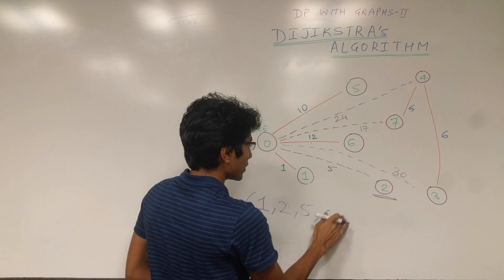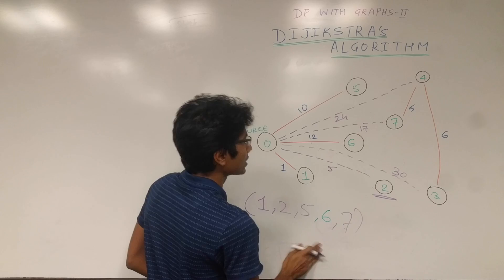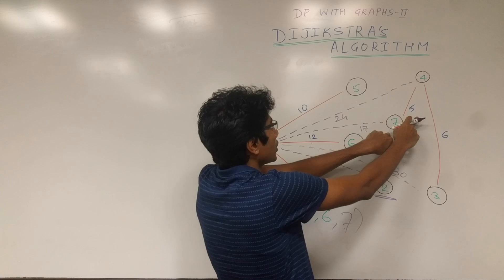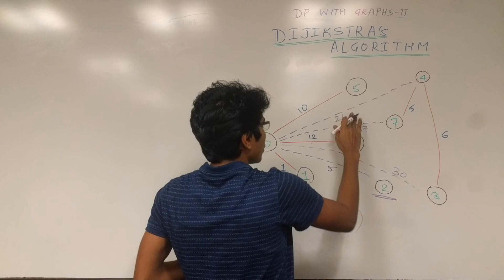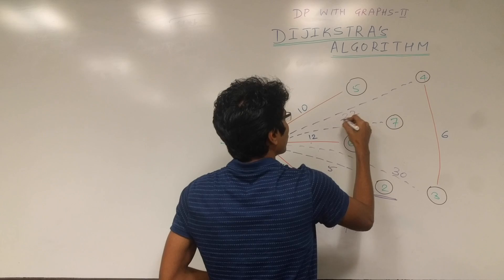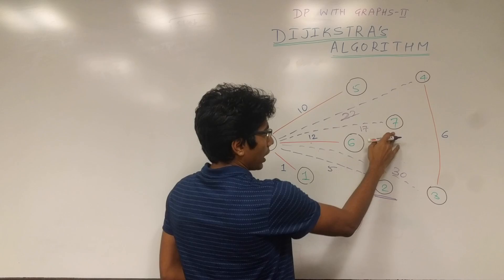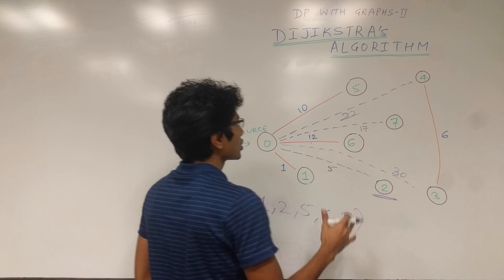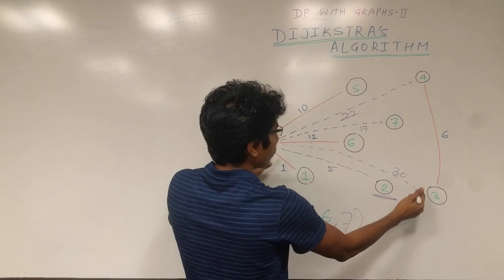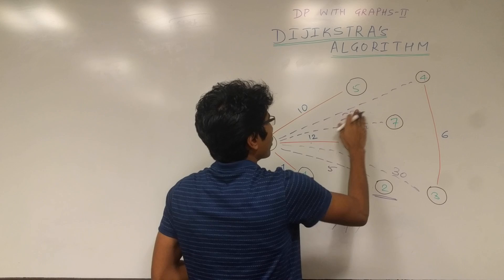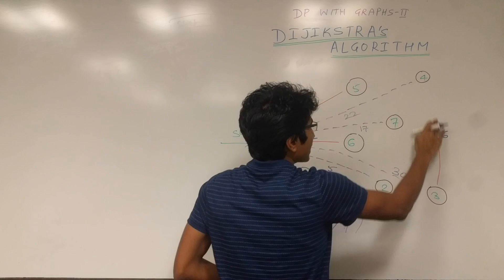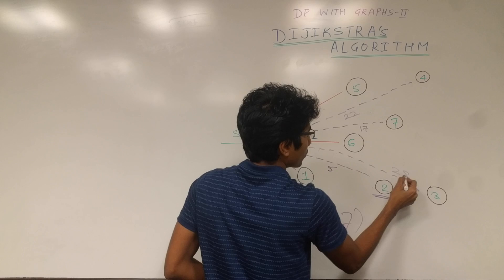Node 7 is added to the visited set. From node 7, there's an outgoing edge with weight 5 to node 4. So 17 + 5 = 22, which competes with the current distance of 24 to node 4. Since 22 < 24, we update node 4's distance to 22. Node 7 has no more outgoing edges. Now the smallest unvisited distance is 22 versus 30, so we choose node 4 at distance 22. From node 4 there's an edge of weight 6 to node 3: 22 + 6 = 28, which is less than 30, so node 3's distance updates to 28.